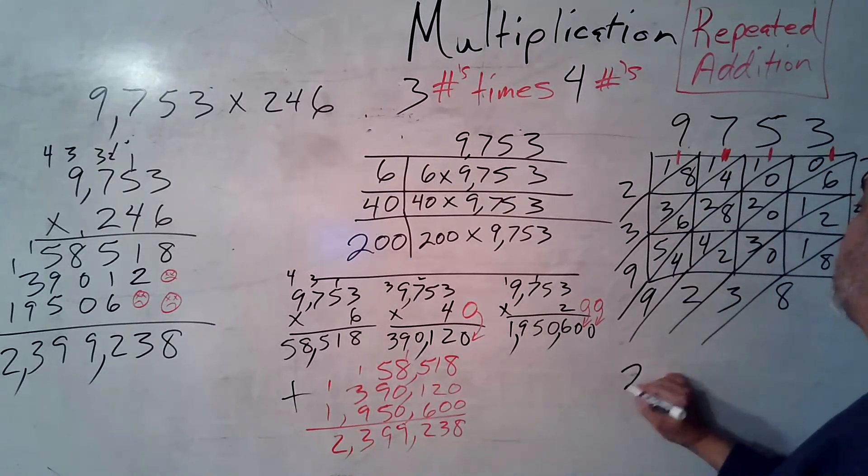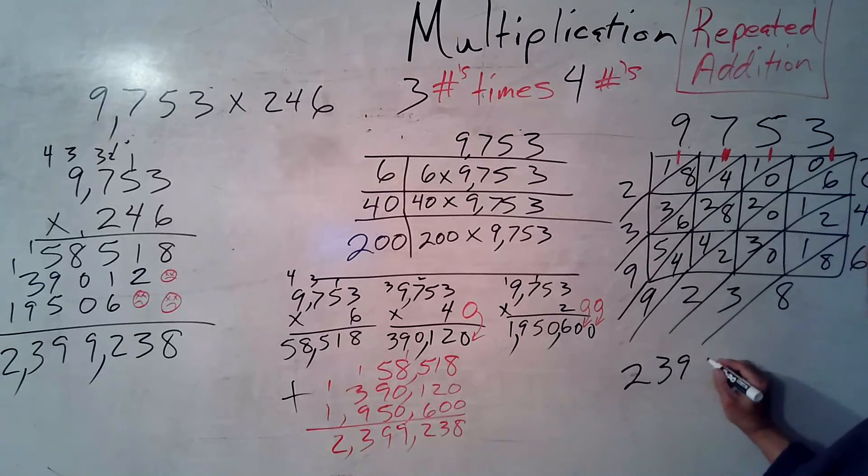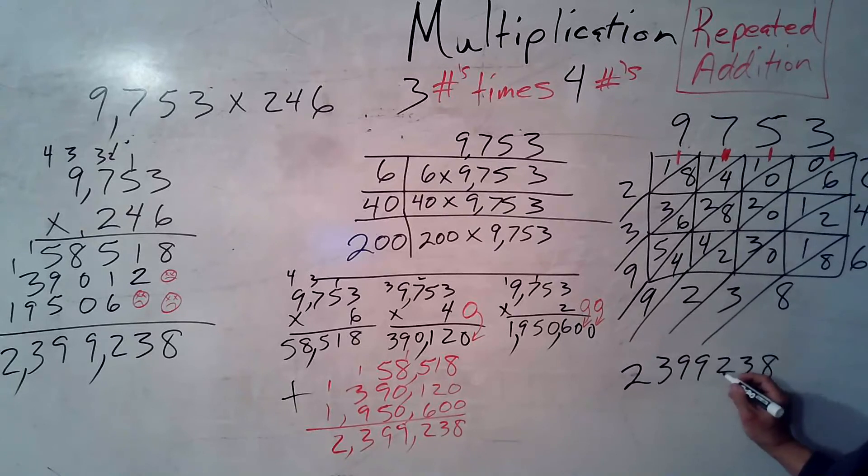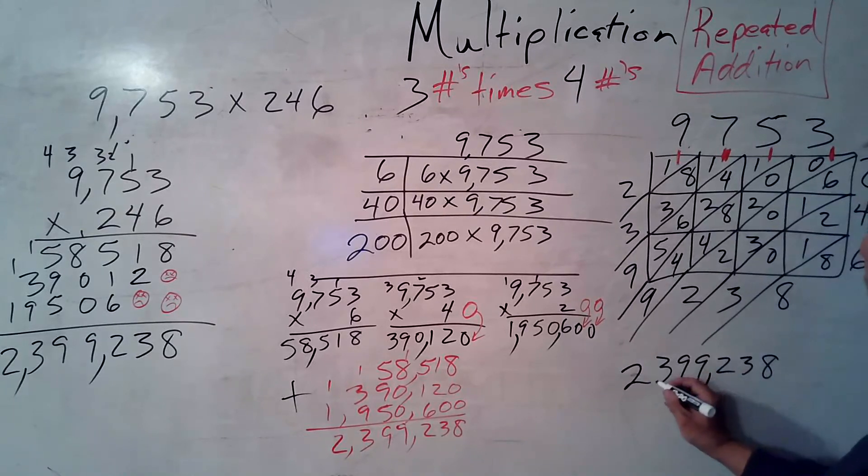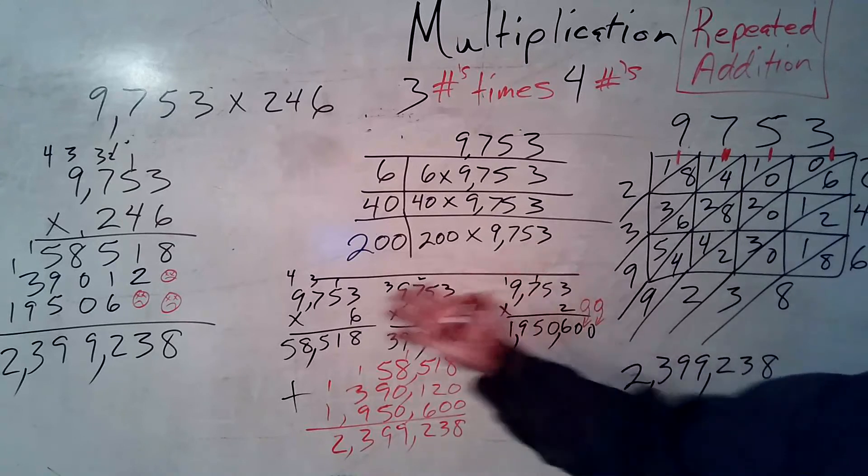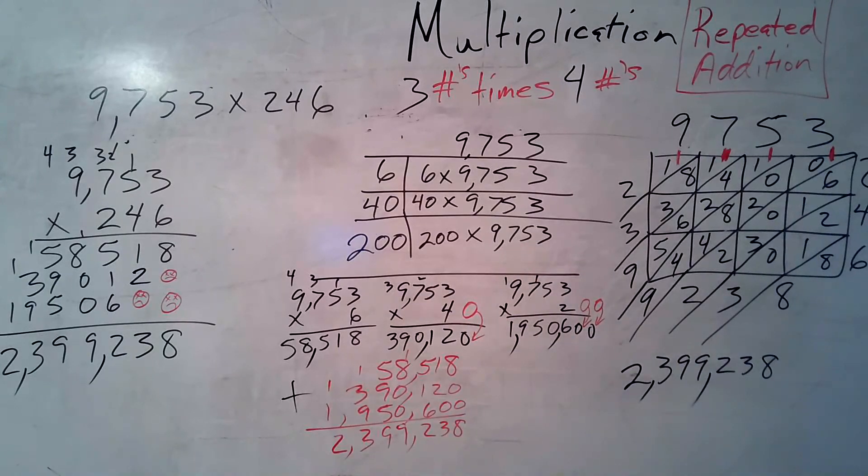Now, I got to write all this down. 2, 3, 9, 9, 2, 3, 8. 1, 2, 3, comma, 1, 2, 3, comma. Oh, check it out. 2, 399, 238. Is that the same as the others? Yes, it is.